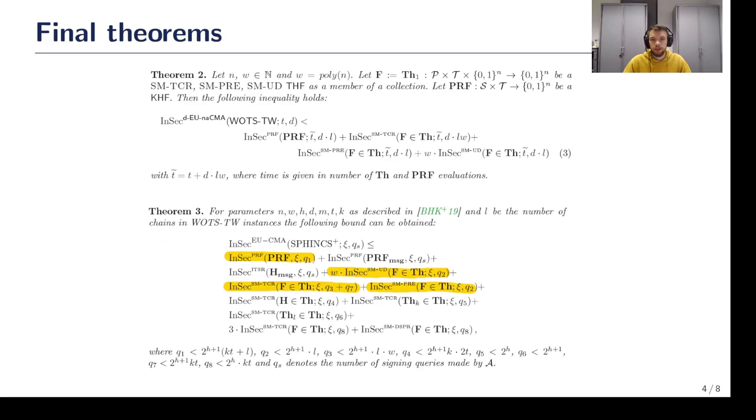In our work, we get a new proof for WOTS signature scheme and show how to integrate this new proof in the security proof of Sphinx+. This way, we obtain a new tight proof for Sphinx+ without changing the scheme. The proof for other parts of Sphinx+ did not change.